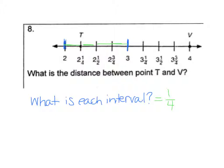So now all I have to do is count my fourths from T to V. So we've got 1, 2, 3, 4, 5, 6, 7. 7 fourths. Well, that's an improper fraction, so I would want to turn that into a mixed number. 7 divided by 4. 4 goes in once with 3 left. So 1 and 3 fourths would be the correct distance.